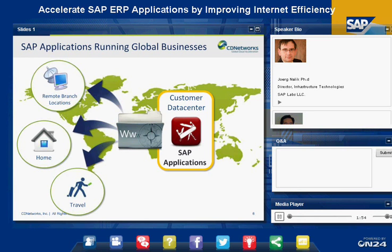SAP is the largest business application vendor in the world. We are known for our enterprise business applications, which are typically run in the data centers of our customers or in the data centers of hosting partners. You can regard our applications as a kind of Swiss army knife for the business — we have applications for HR, for sales and distribution, for finance, and everything it takes to run a large enterprise. The total number of our customers is now exceeding 200,000.